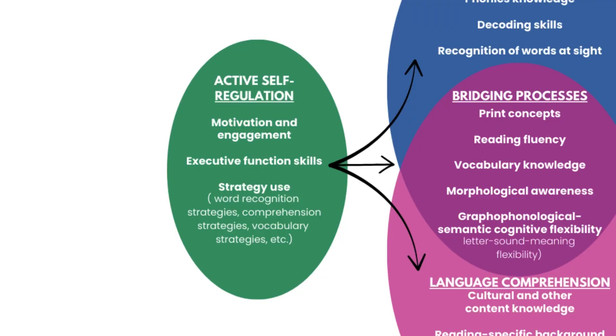If you look over to the left of the graphic, it also talks about active self-regulation. We know that if students are unable to self-regulate, there is not a lot of learning that is going to go on. Under this we have motivation and engagement, executive function skills, and strategies.